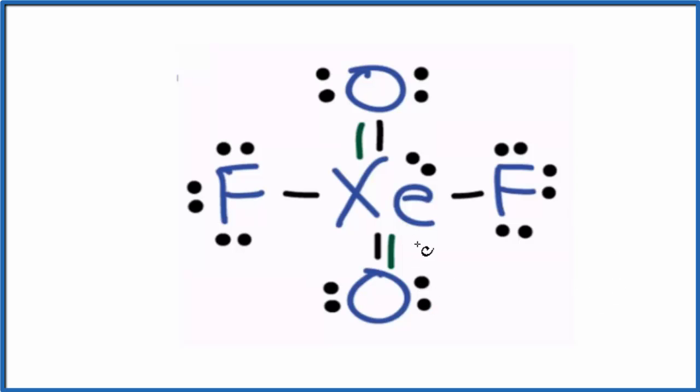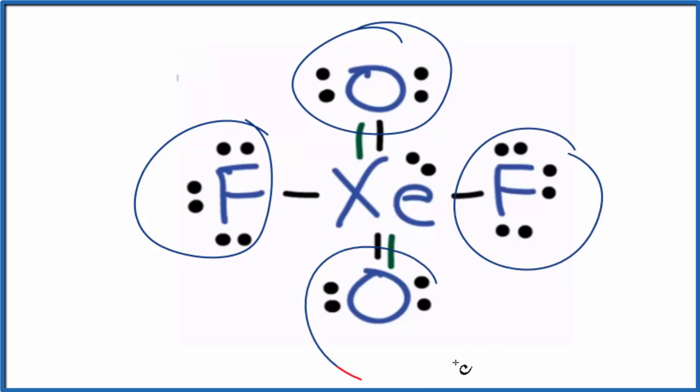Once we have the Lewis structure, we can imagine all of these atoms here pushing away from each other and spreading out. And this lone pair, it occupies space and volume. It's going to push out against the atoms as well. So they'll all spread out. That's what's going to give us our molecular geometry for XeO2F2.